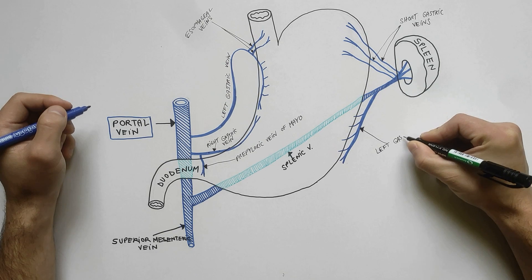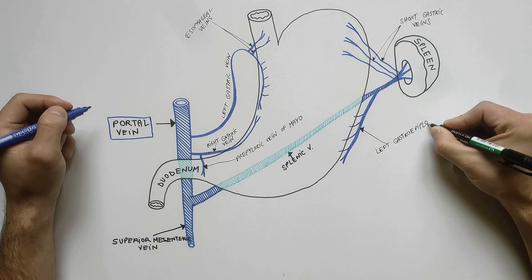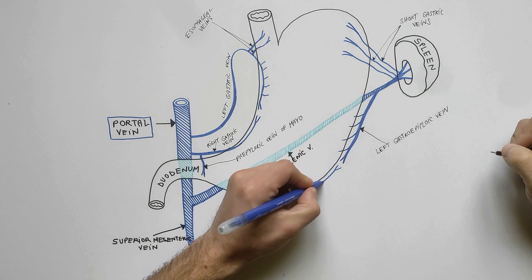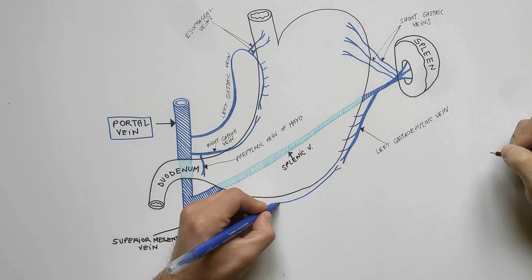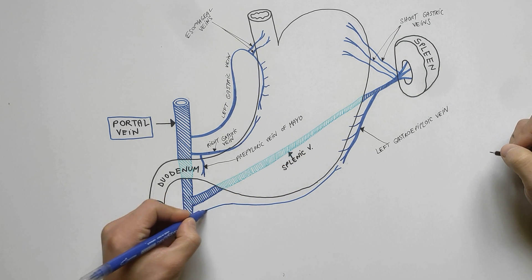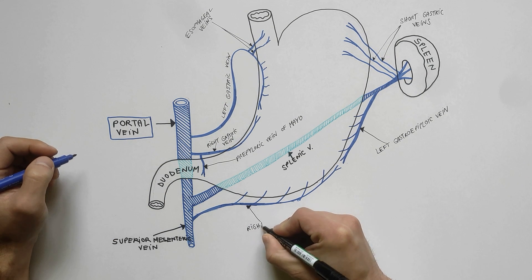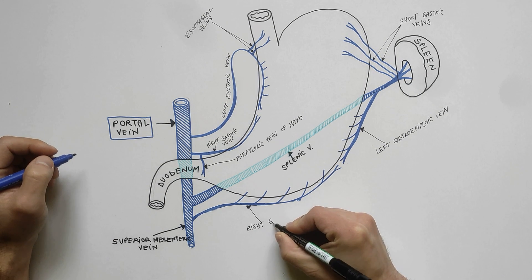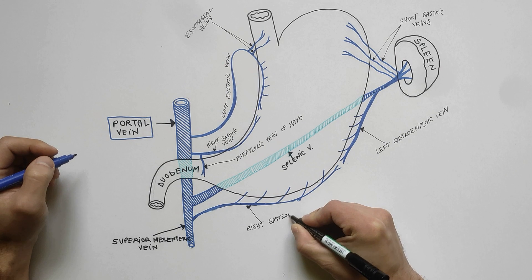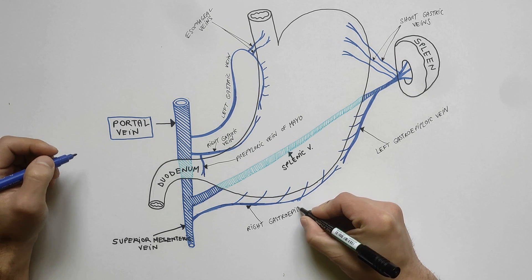The right gastroepiploic vein runs from left to right along the greater curvature of the stomach and drains into the superior mesenteric vein.